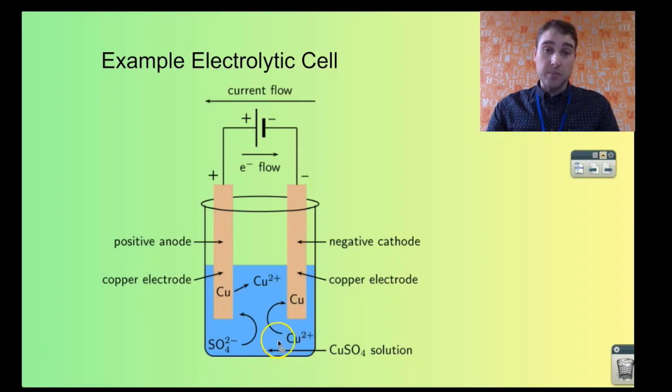And at that electrode we're getting copper ions from the solution plating onto the copper electrode. Because we've got the ions being reduced to copper, the copper ions are being reduced to copper, that's happening at the cathode. Cathode is where reduction happens. Now because we're pushing the electrons over here, we've got a lot of electrons on this electrode, that's giving it a negative charge.